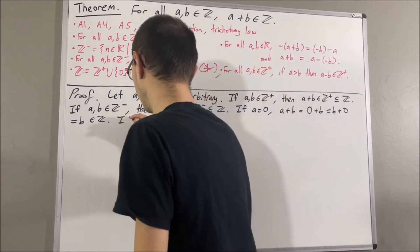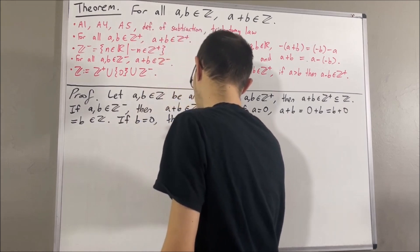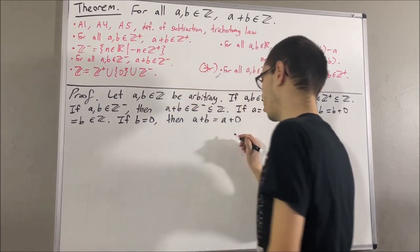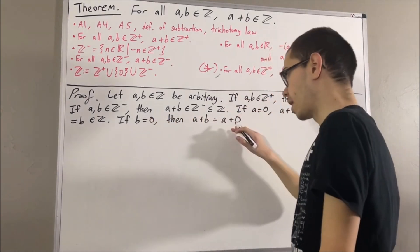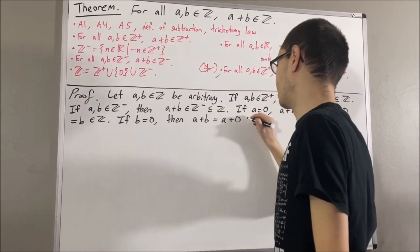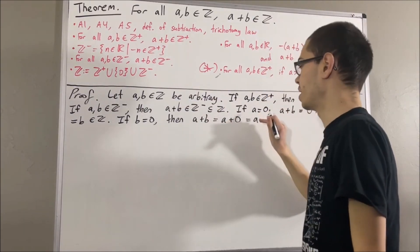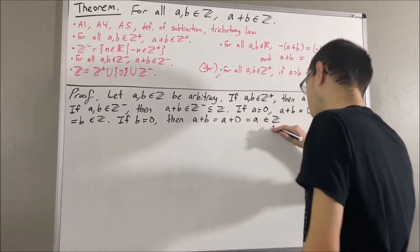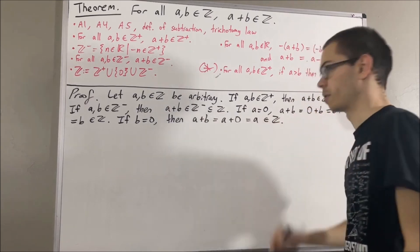Similarly, if b is equal to zero, then a plus b equals a plus zero. By axiom 4, a plus zero equals a. And by assumption a is an integer, so a plus b is an integer.